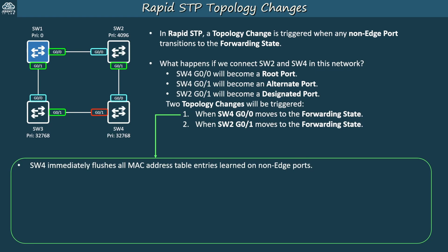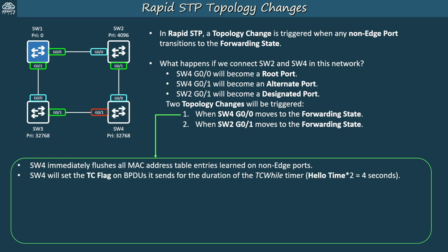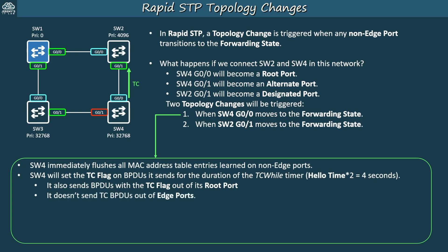Rapid STP skips the 'notify the root bridge' step used by classic STP. Instead, SW4 will set the TC flag on BPDUs it sends for the duration of the TC while timer, which is twice the hello timer — so 4 seconds. However, SW4 doesn't have any designated ports, so under normal circumstances it doesn't send any BPDUs. But in the event of a topology change, the switch also sends BPDUs with the TC flag out of its root port. It doesn't send these TC BPDUs out of edge ports, as hosts have no need to learn about topology changes.